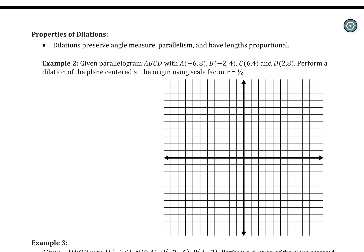Start off by plotting the points to create your figure. We've got A at negative 6, 8; B at negative 2, 4; C at 6, 4; and D at 2, 8. Using your straight edge, connect all of those dots to create the parallelogram. Now that we have that done, we need two things in order to do the dilation: a center of dilation and a scale factor. In this one, the dilation is performed at the center of the origin — that's my center of dilation.